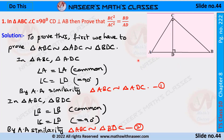To prove this, first we have to prove that triangle ABC is similar to triangle ADC, which is similar to triangle BDC. Taking the first two triangles, triangle ABC and triangle ADC: angle A is common, angle C equals 90 degrees, and angle D equals 90 degrees. By angle-angle similarity, triangle ABC is similar to triangle ADC. Let this be equation 1.